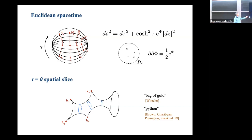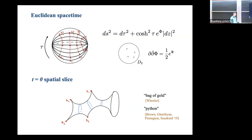Looking at the time-zero time-symmetric slice, the spatial geometry is a hyperbolic geometry on the disc with four conical defects. As long as these conical defects are strong enough, we end up with minimal surfaces in the t=0 slice. This is an example of a pure state black hole created by Euclidean path integral with time-symmetric initial data — sometimes called bag-of-gold geometries or python's lunch geometries.